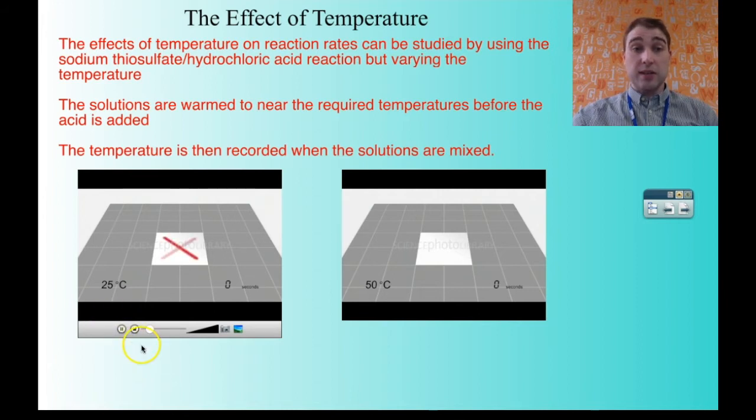This one's at 25 degrees. We put our cross down using a petri dish instead of a conical flask. The petri dish has the thiosulfate. We add in the acid, and we start our timer. And we're seeing how long it takes for the cross to become obscured. We're up to 80 seconds, and it's 110. So it takes 110 seconds at 25 degrees.